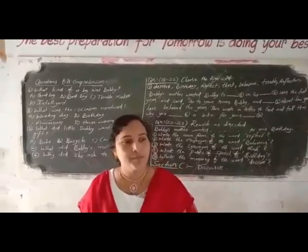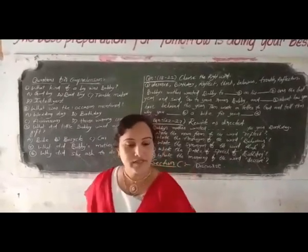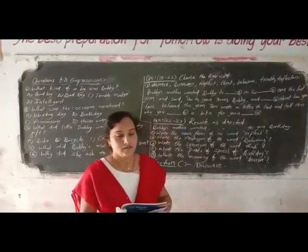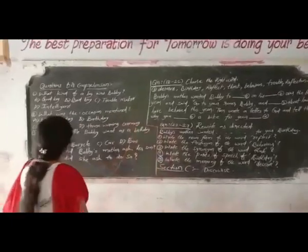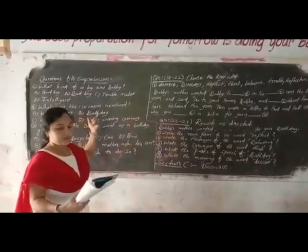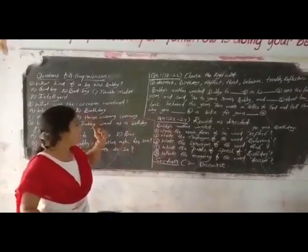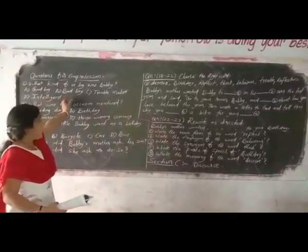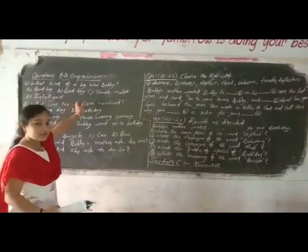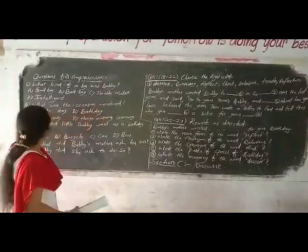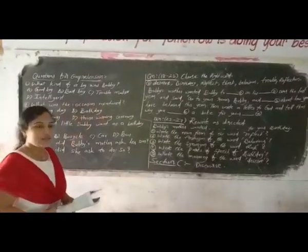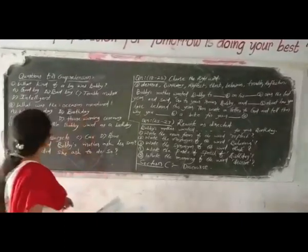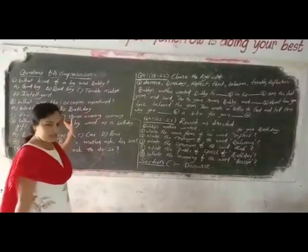Come to the comprehension part now. See here in the first passage. What kind of a boy was Bobby? Is he a good boy? Is he a bad boy? Is he a trouble maker? Or the intelligent one? Please give your answer.